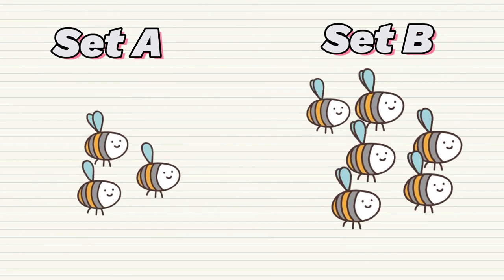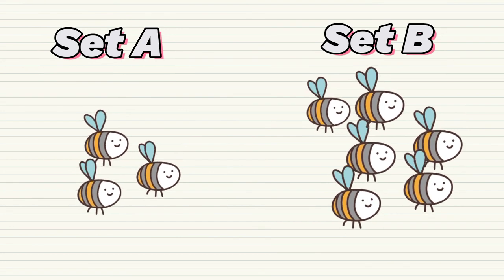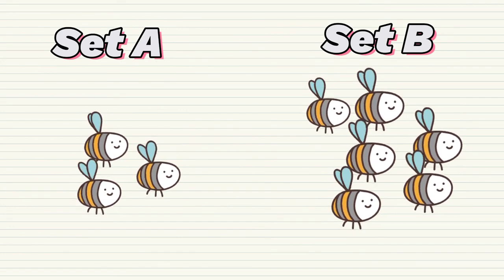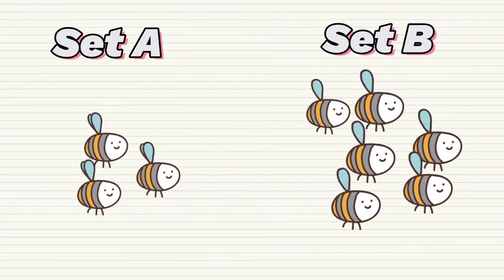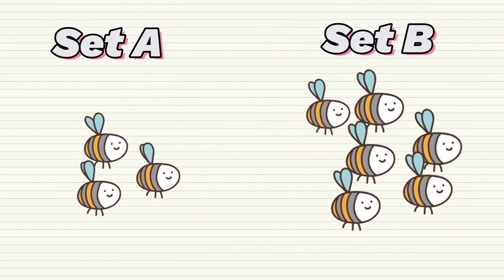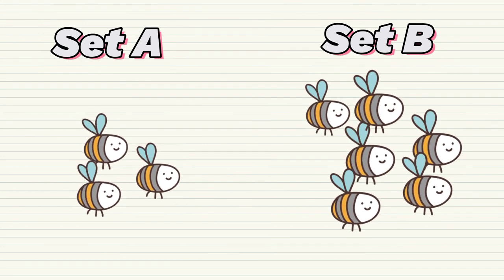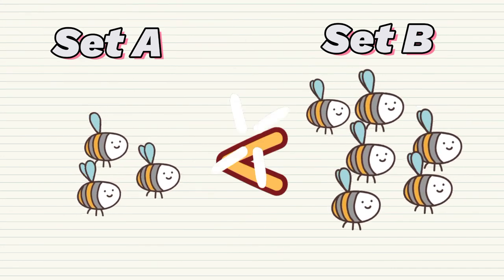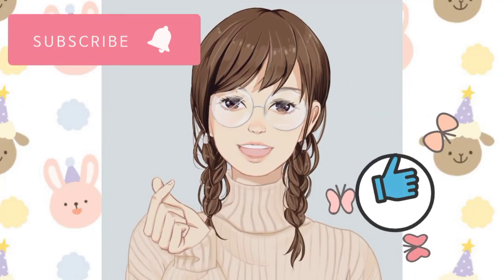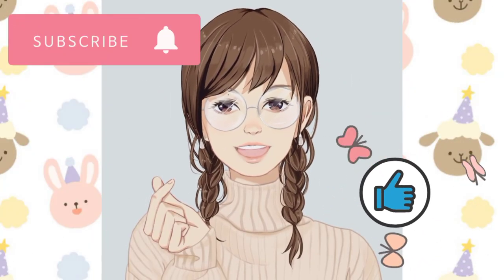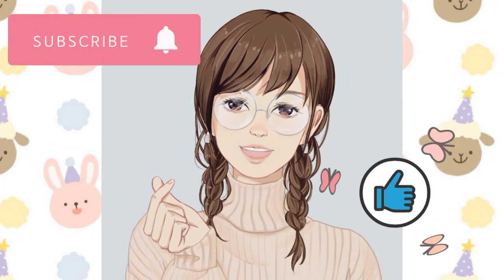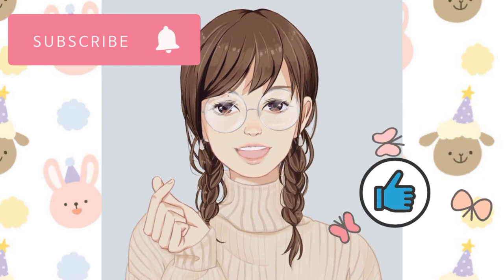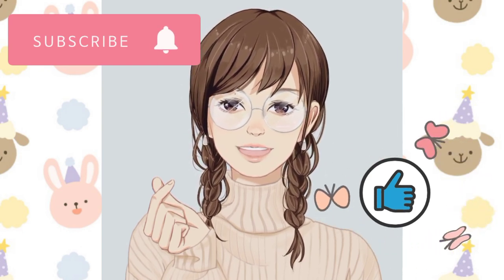If set A has less objects compared to set B, we say that set A is less than set B. That's all for today, kids, and I hope you understood what sets are and how to compare them.